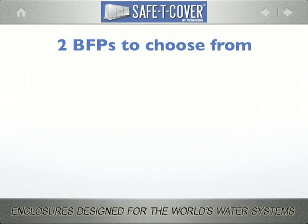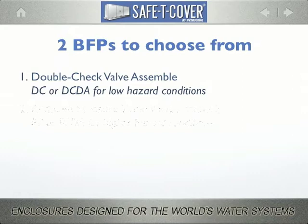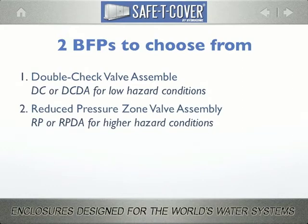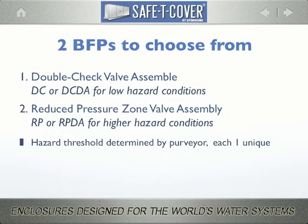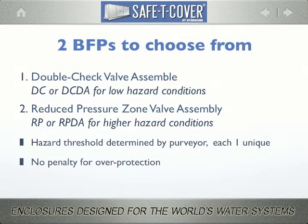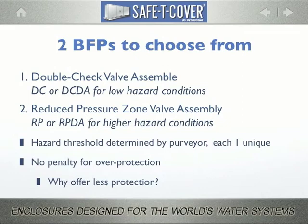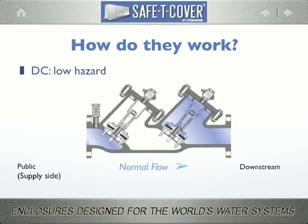As a designer, you may specify one of two types of backflow preventer generally: the double check valve assembly, or the reduced pressure zone valve assembly. The difference between the two devices is perceived hazard. The purveyor determines hazard, but most every jurisdiction is different — every city has its own list of named examples of what constitutes the hazard threshold. If the anticipated use is not named explicitly, they reserve the right to make the decision during codes review. It's important to understand that you cannot overprotect the incoming water service; there is no penalty for providing the higher degree of protection. So you should ask yourself: is there wisdom at all in providing the lower level of risk protection?